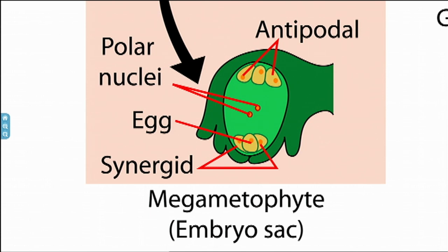Now, there's a lot of stuff going on inside the ovule. You don't need to worry about most of those labels. What you do need to worry about is down the bottom you can see the egg. And in the middle of the ovule you can see two red dots called the polar nuclei. The polar nuclei are like dud eggs — they didn't quite make it. But they are very, very useful.